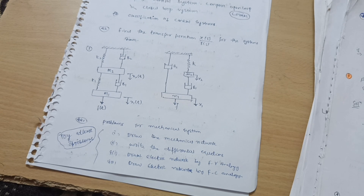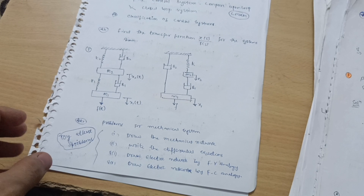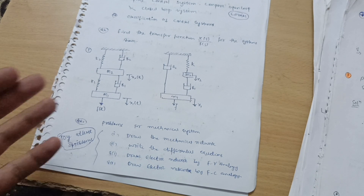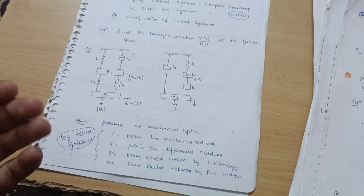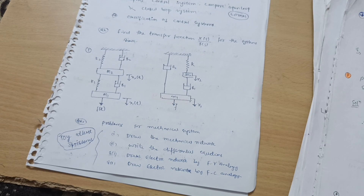I hope this video is beneficial for you. You can easily score more than 80 in this Control Systems subject by covering block diagram reduction, root locus, Bode plot, and Nyquist plot. Make sure to share this video with all your friends who need it. Thank you for watching.